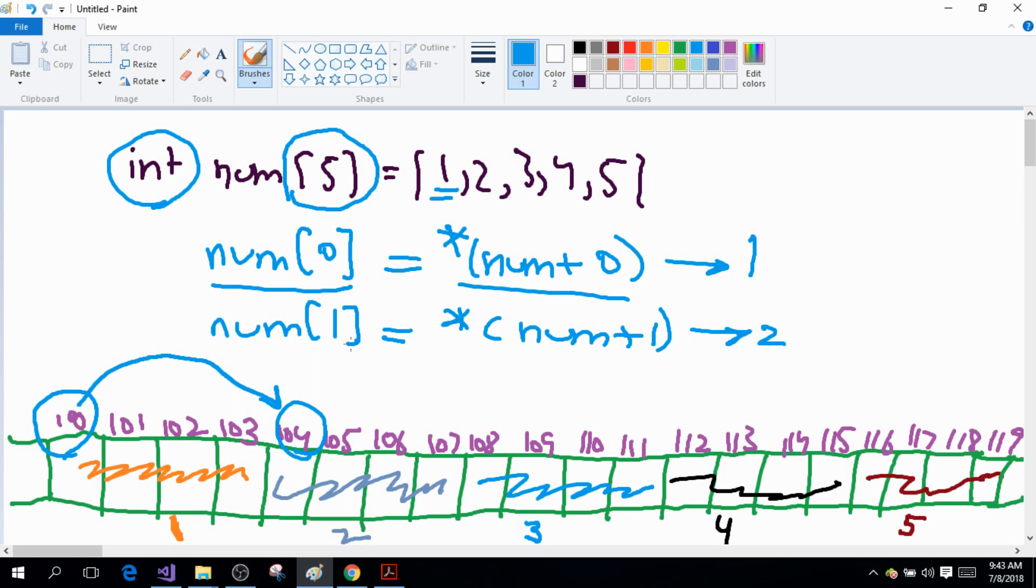Similarly, if I write num[3], this will be equal to dereferencing num plus 3. And num plus 3: so this is num initially at address 100, plus 1 is 104, plus 1 is 108, plus 1 is 112. And dereferencing it, I'm accessing the value at this address, and this will give me the value 4.